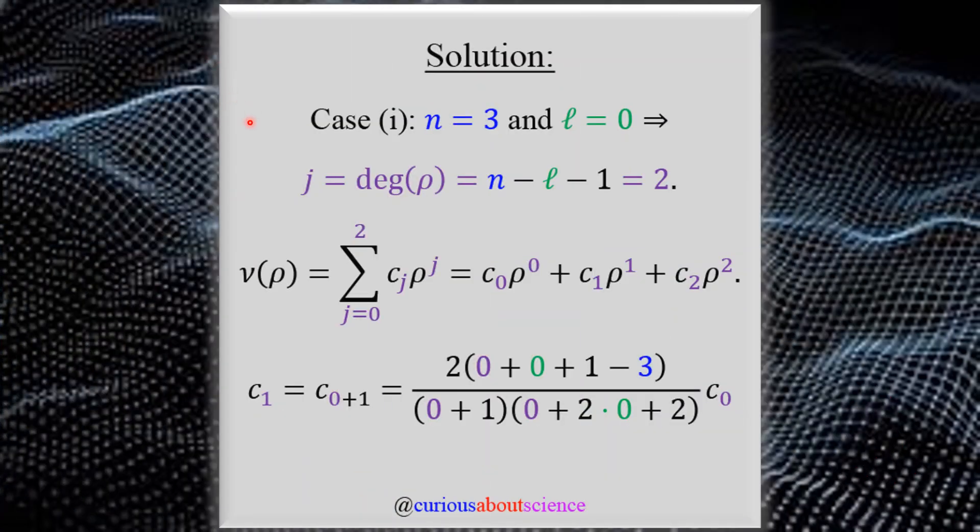All right, first and foremost, for case one, we wanted R of three and zero, meaning that we want n equals three and l equals zero. This tells us that j can be of degree rho up to the limiting condition of n minus l minus one, which is equal to two. All this is talked about more in the PDF, so feel free to check that out. Here, though, the important part is that the expansion of v of rho can only go up to two as seen in the submission.